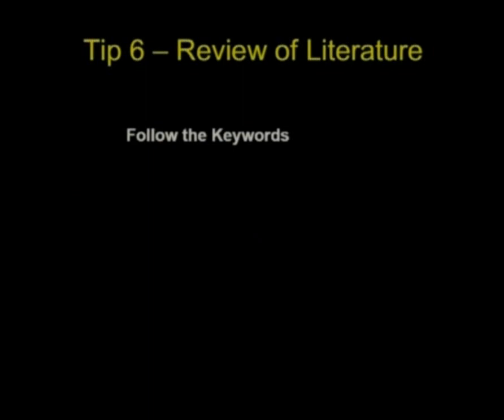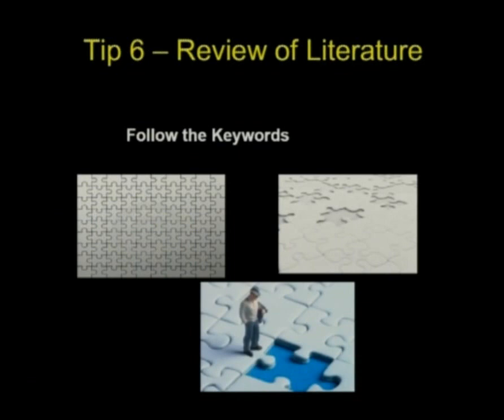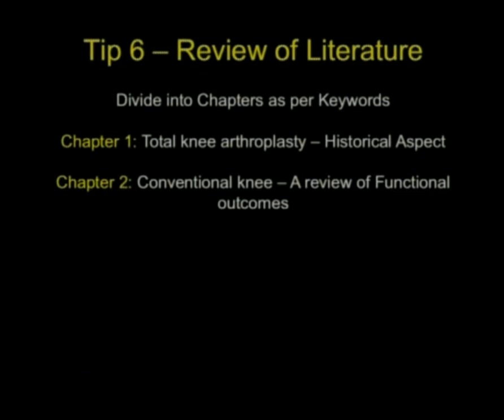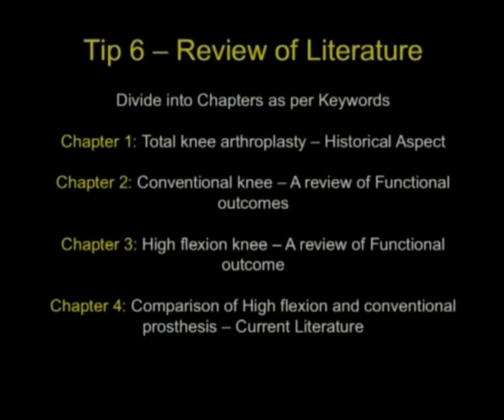Sixth is review of literature. You need to follow the keywords. Start from the most broad keyword, knee arthroplasty and then go on becoming more and more specific till you reach the question that you are looking at. Divide your review of literature section into various chapters. Chapter will be on knee arthroplasty. The first keyword, historical aspects. Two will be on conventional, review of functional outcome. Three will be high flexion knee, review of functional outcome. And fourth will be actually your title. Comparison of high flexion and conventional processes is current literature review. You divide your review of literature section into four sections. This is guided by your keywords.